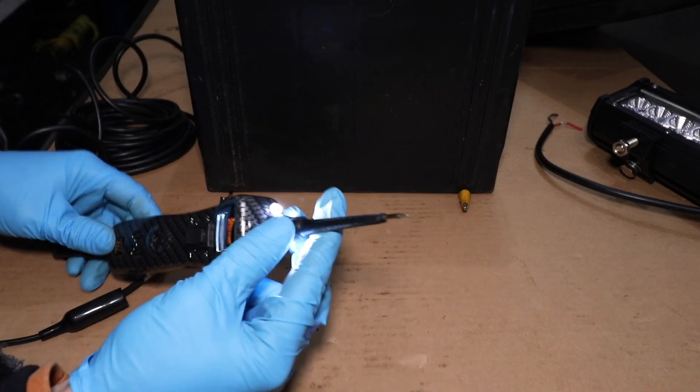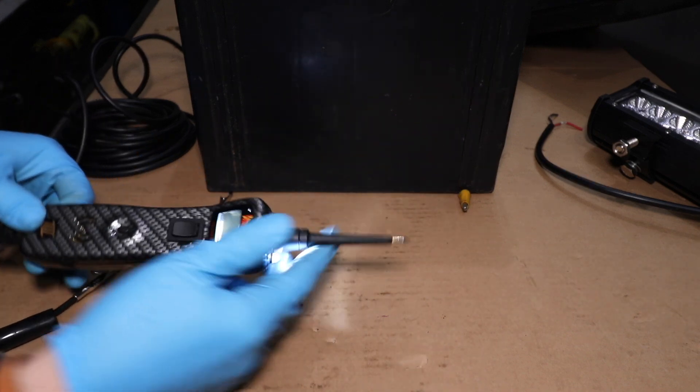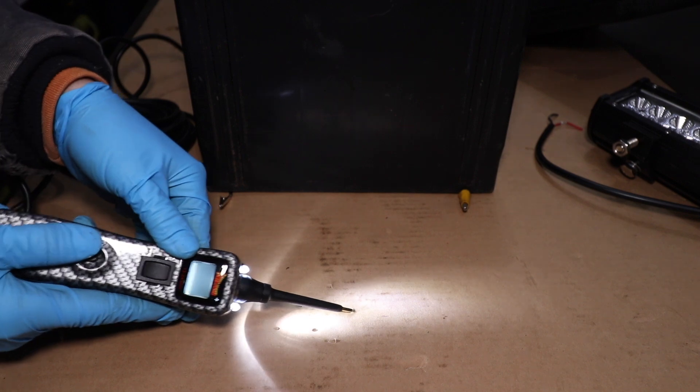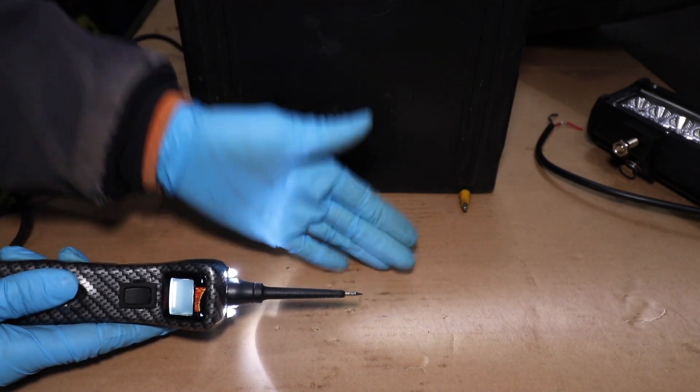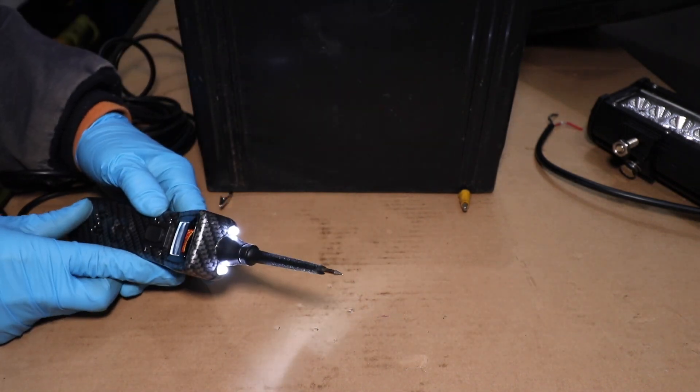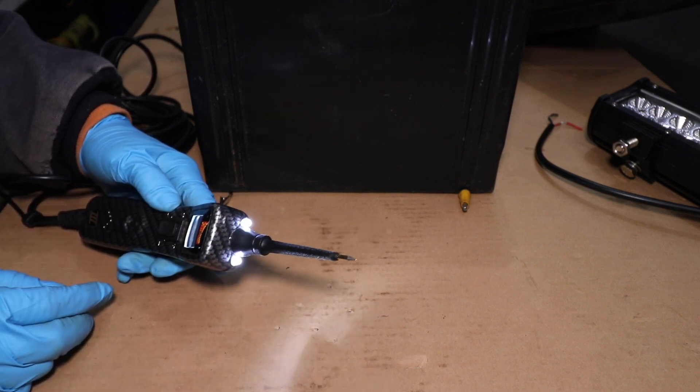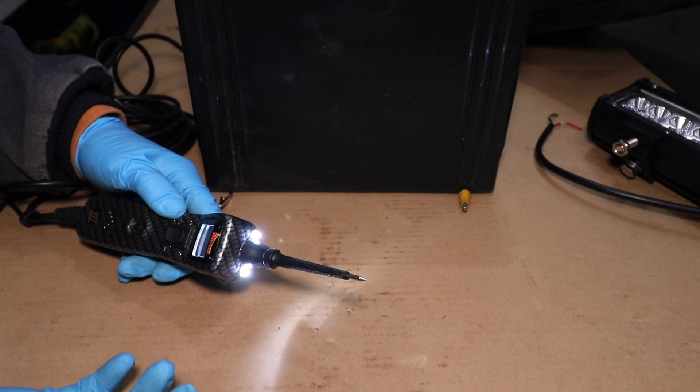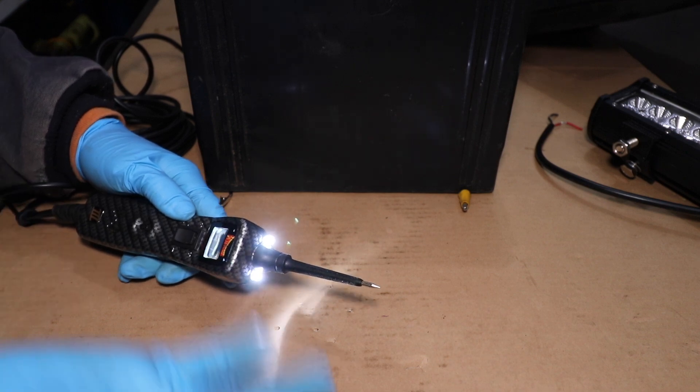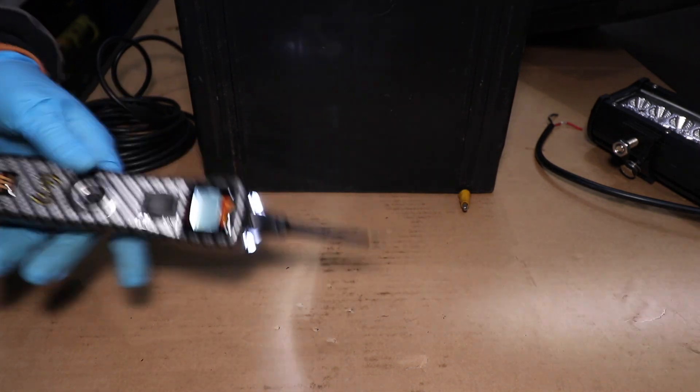So starting off, the end of the Power Probe is sharp and it is designed to pierce through the jacket of wire. Not ideal. You really shouldn't do that, but sometimes you have to do what you have to do. You also have two LED lights which illuminate the probe on the end of the Power Probe, which is fantastic when you're working in dark spaces underneath a dash in an engine bay. Just really well thought out feature.